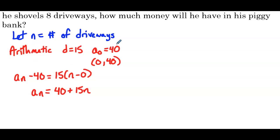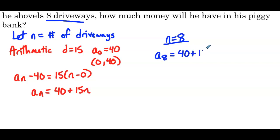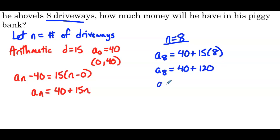So now we want to figure out how much he would have if he shoveled eight driveways — that's n equals 8. A sub 8 equals 40 plus 15 times 8, so a sub 8 equals 40 plus 120, which is 160. So how much money would he have in his piggy bank? He would have $160.